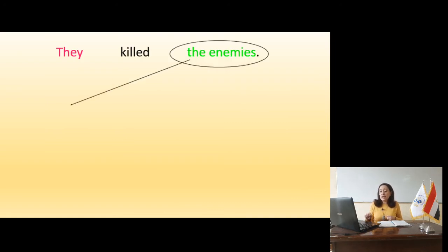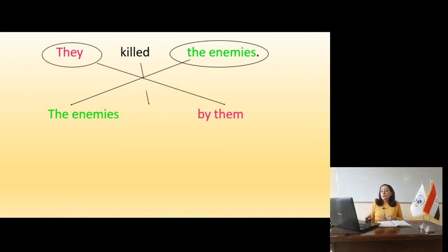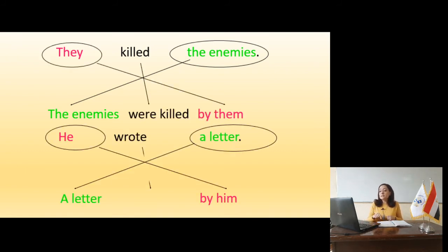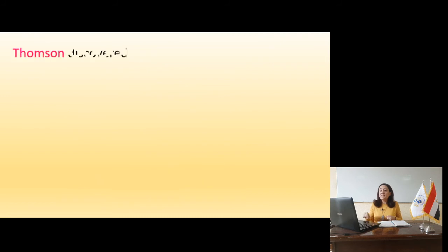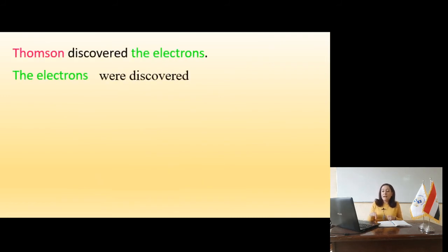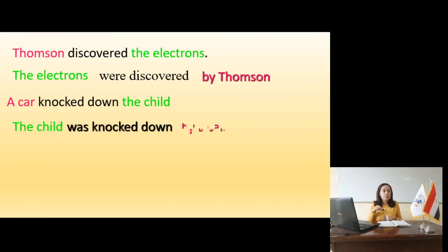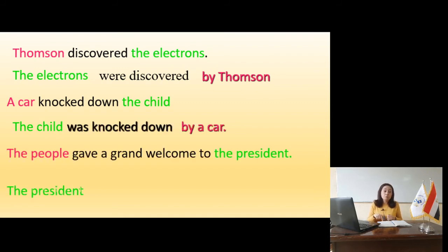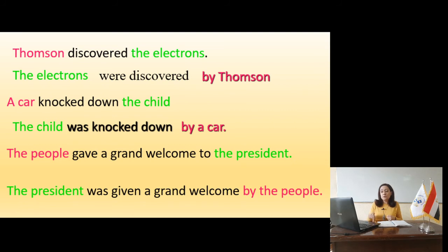Slide 13 — 'Thompson discovered the electrons.' The electrons is the object, discovered is past simple, so verb to be is 'were.' Past participle: discovered. Result: 'The electrons were discovered by Thompson.'